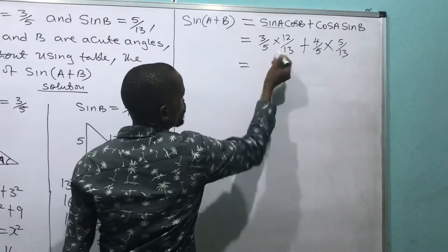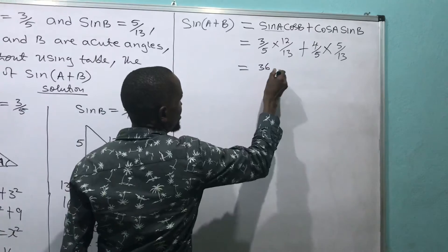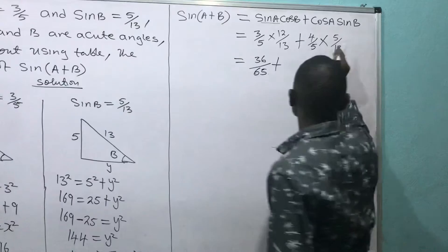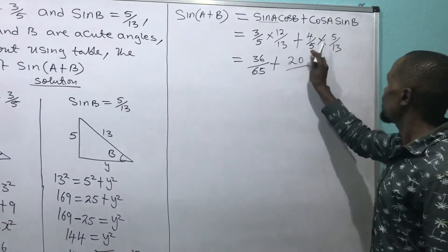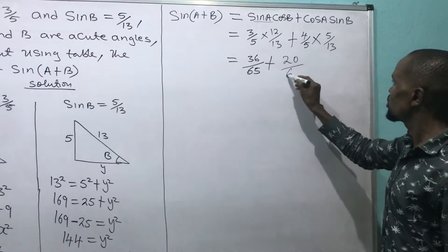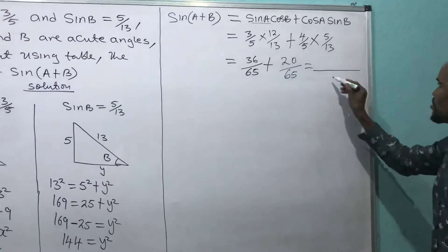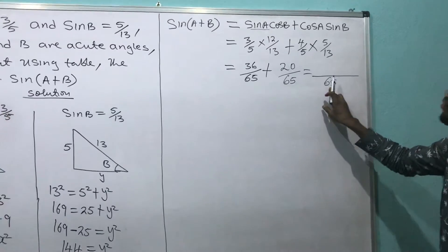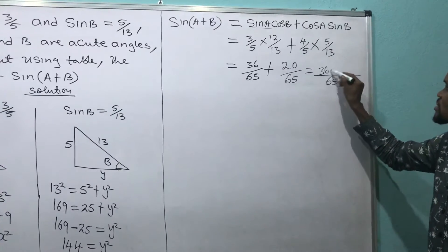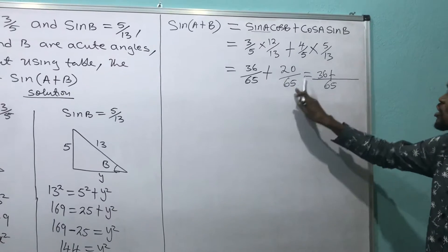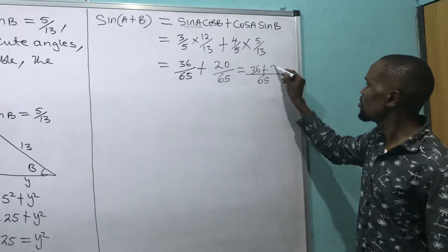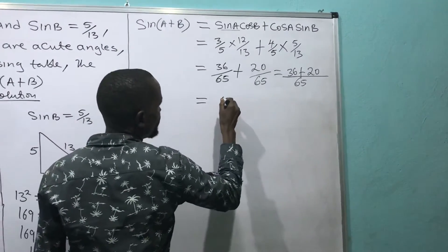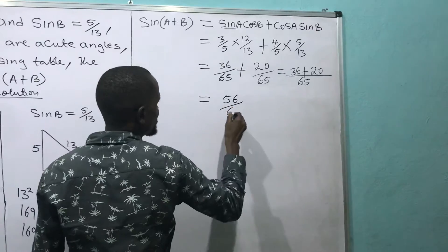Expanding: 3 times 12 gives 36, and 5 times 13 gives 65, so the first term is 36/65. Plus: 4 times 5 gives 20, and 5 times 13 gives 65, so the second term is 20/65. Adding these: 36 plus 20 over 65 equals 56 over 65.